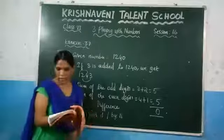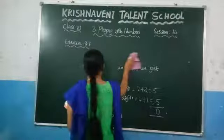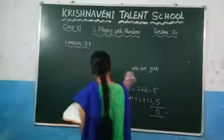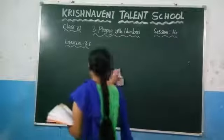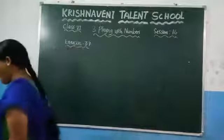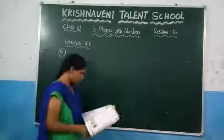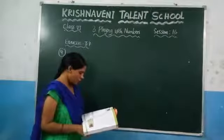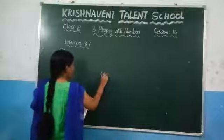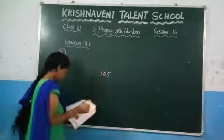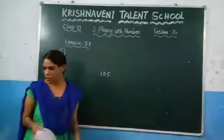Now see the last problem in this chapter — the 9th question. They ask: write the nearest number to 105 which is divisible by 4. Here they have given the number 105. You need to find what is the nearest number to 105 such that that number is divisible by 4.